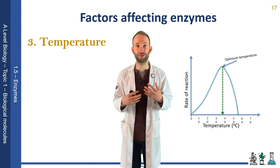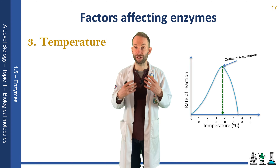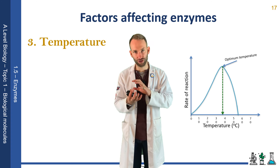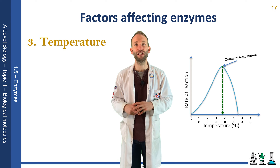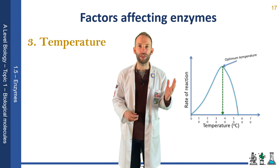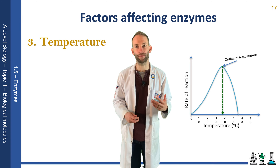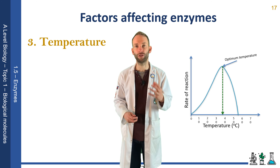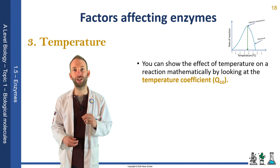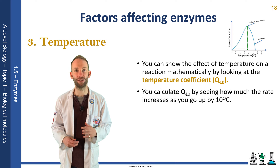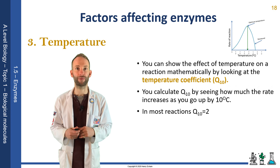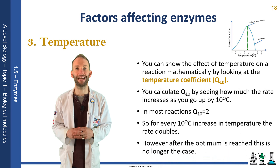Temperature affects enzyme activity differently. Increasing temperature increases the rate of reaction due to more kinetic energy, more collisions, and more successful collisions — as shown at the start of the graph. However, too much kinetic energy causes bonds to break, and the enzyme's tertiary and quaternary structure breaks down — the enzyme becomes denatured, which is a permanent change. Cooling enzymes down doesn't denature them; they just become inefficient. You can show the effect of temperature mathematically using the temperature coefficient Q10, which measures how much the rate increases per 10°C rise. In most reactions, Q10 equals 2, so the rate doubles every 10°C — but this no longer holds after the optimum temperature, when denaturation begins.